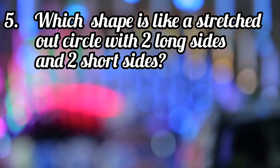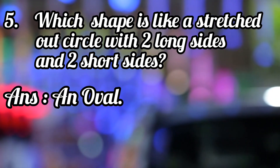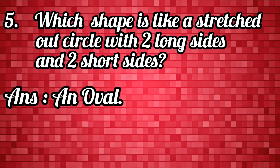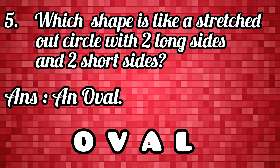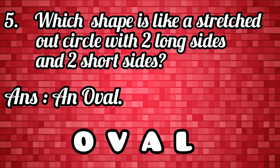Which shape is like a stretched out circle with two long sides and two short sides? An oval. O-V-A-L. An oval is a stretched out circle with two long sides and two short sides.